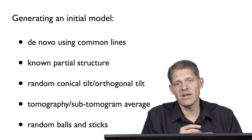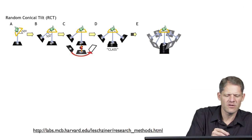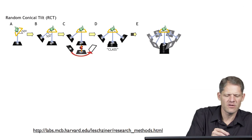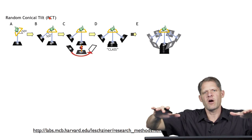Each of these methods to generate an initial model has its advantages and disadvantages, so for each particular case they should all be considered. Now let's look in more detail at the method called random conical tilt, using a figure from Andre Lechinger's web page.